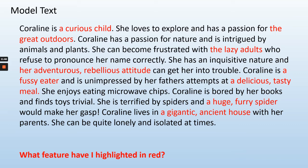So let's have a look at this piece of text. Coraline is a curious child. She loves to explore and has a passion for the great outdoors. Coraline has a passion for nature and is intrigued by animals and plants. She can become frustrated with the lazy adults who refuse to pronounce her name correctly. She has an inquisitive nature and her adventurous, rebellious attitude can get her into trouble. Coraline is a fussy eater and is unimpressed by her father's attempts at a delicious, tasty meal. She enjoys eating microwave chips. Coraline is bored by her books and finds toys trivial. She is terrified by spiders and a huge furry spider would make her gasp. Coraline lives in a gigantic ancient house with her parents. She can be quite lonely and isolated at times. Looking at the words highlighted in red, what feature do you think this might be? Pause the video now and have a think.